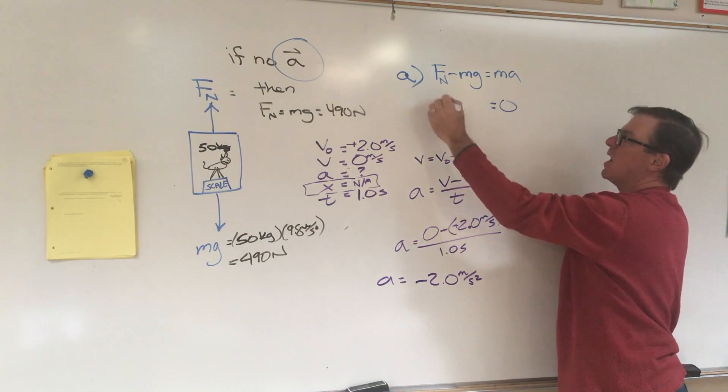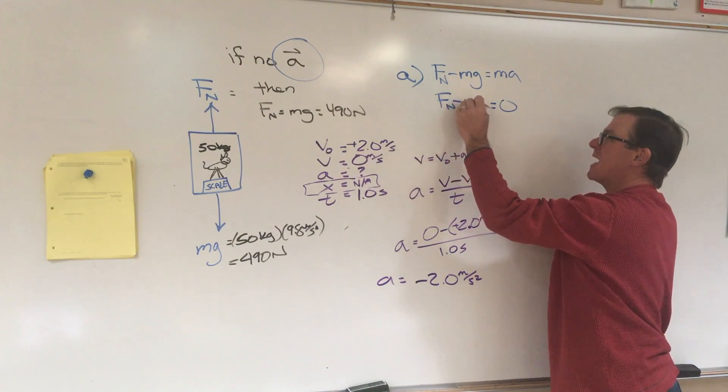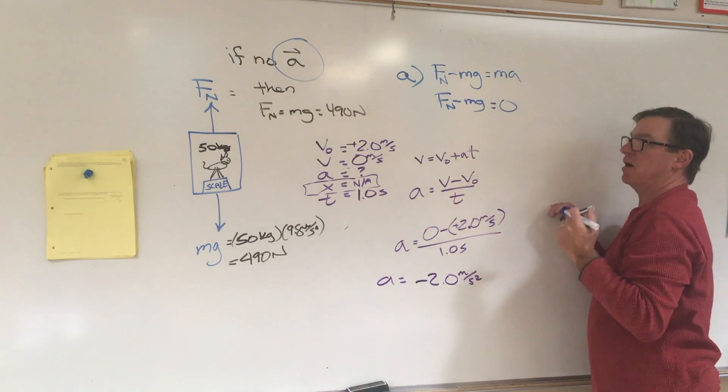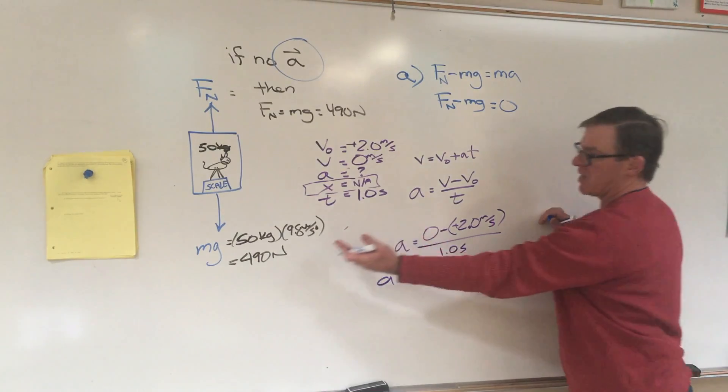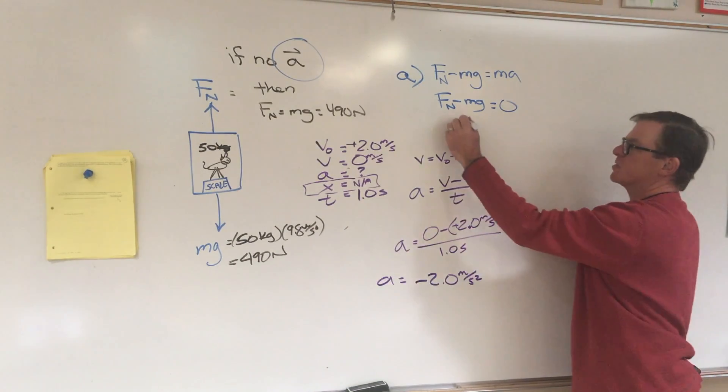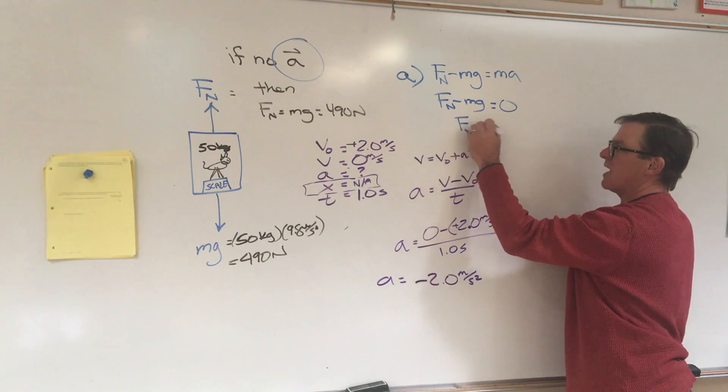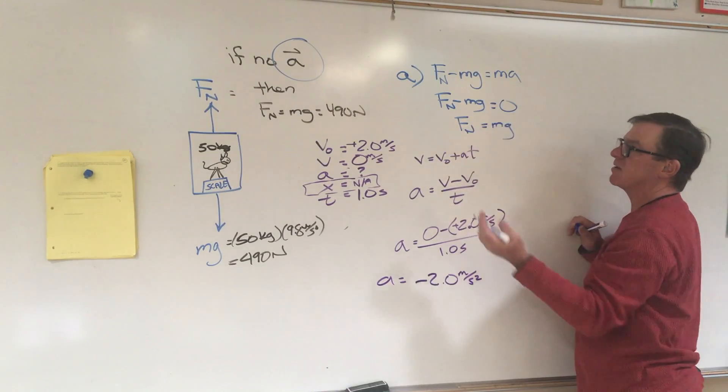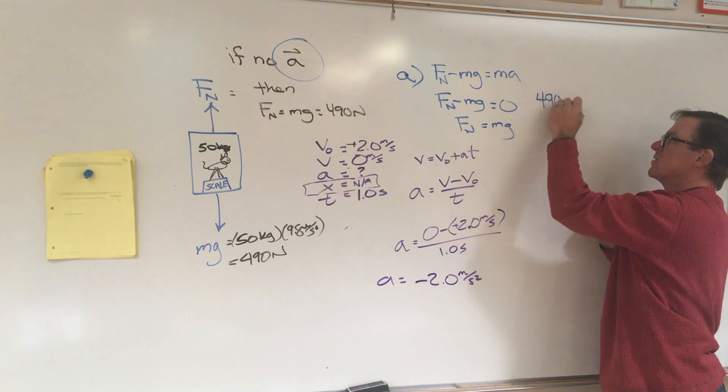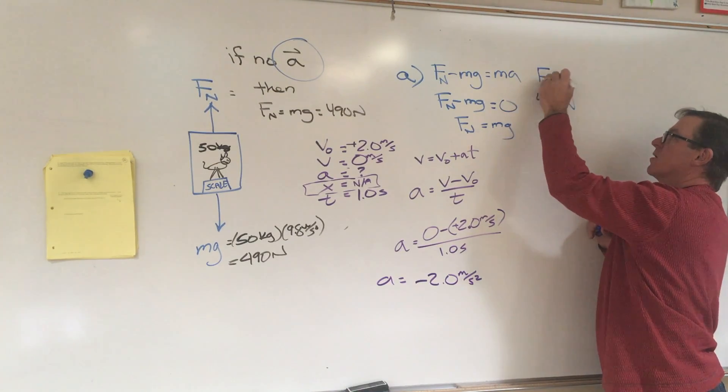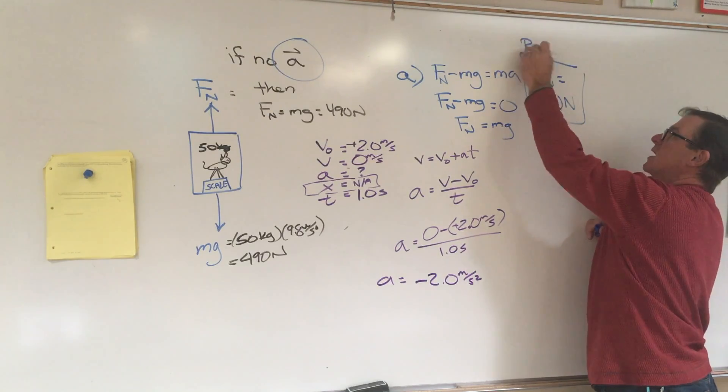But A is 0, and 0 times 50 is still 0. So we know that up minus down equals 0, and we know down equals 490. In other words, we know that in this situation F net equals MG, and the answer is 490. The reading on the scale equals 490.